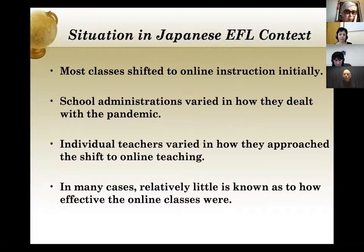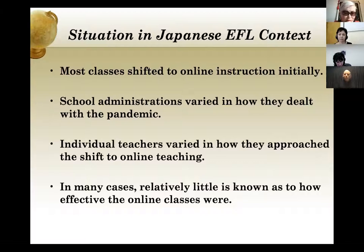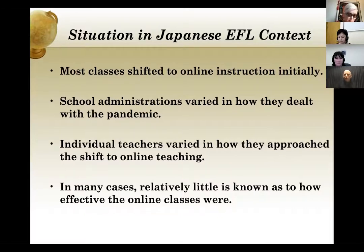Basically, it depended on where you lived. If you lived in small towns, there were still face-to-face classes especially at the beginning, but if you lived in bigger cities, most classes shifted to online instruction. Initially school administrations varied in how they dealt with the pandemic — to be honest, that's a polite way of saying that most schools were very underprepared. It was obvious that there just wasn't any preparation, and teachers were really left to their own devices.